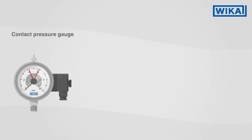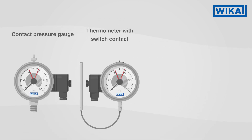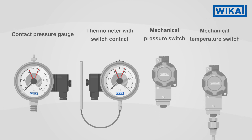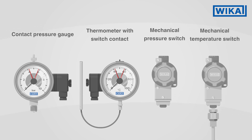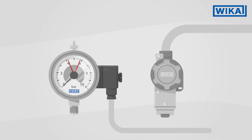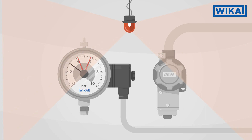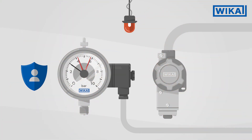Contact pressure gauges, thermometers with switch contacts, and mechanical pressure and temperature switches are used in a huge variety of applications. They are mainly used to monitor limit values. When exceeding or falling below a limit value, a signal is output which activates, for example, an alarm or cuts off a process in order to protect people and plants.